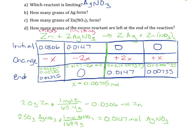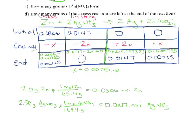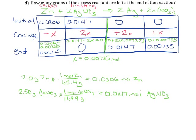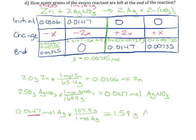The next question says how many grams of silver form. We know we're looking at silver at the end of the reaction, but remember that this piece of information is in moles — everything in the ICE table is in moles. However, they are asking us for the final answer in grams, so we need to do stoichiometry to convert those moles into grams. I know that I have 0.0147 moles of silver at the end of this reaction. Using the periodic table, every one mole of silver weighs 107.9 grams, so I'll get an answer of 1.59 grams of silver.